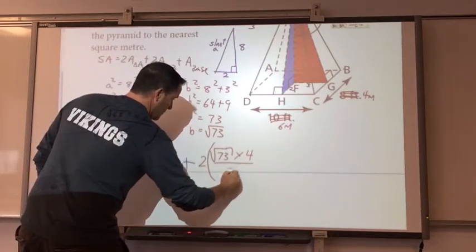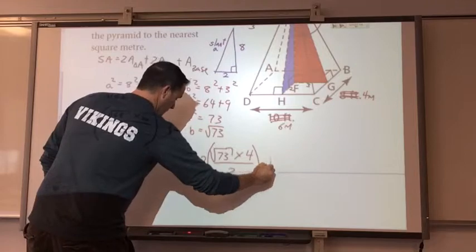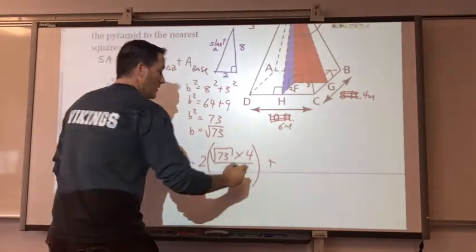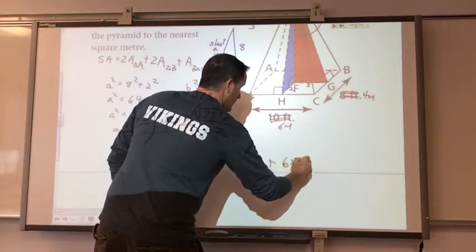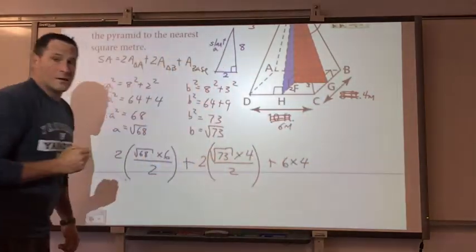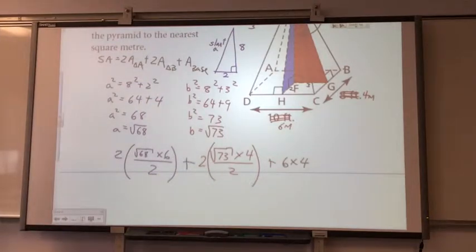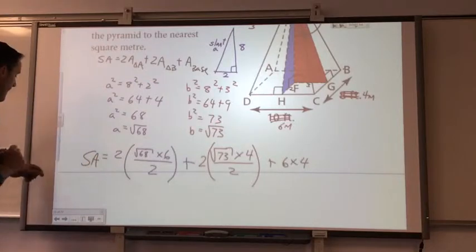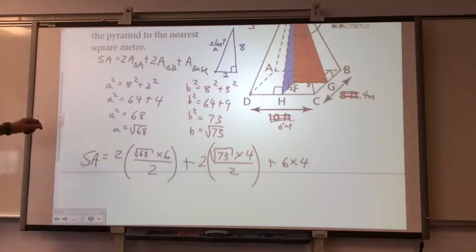Plus 2, square root of 73, times 4, divided by 2, plus square root of 73, times 4, divided by 2, plus 6 times 4. Okay. Hopefully, you guys are able to follow this. And this is all the surface area of this rectangular-based pyramid.